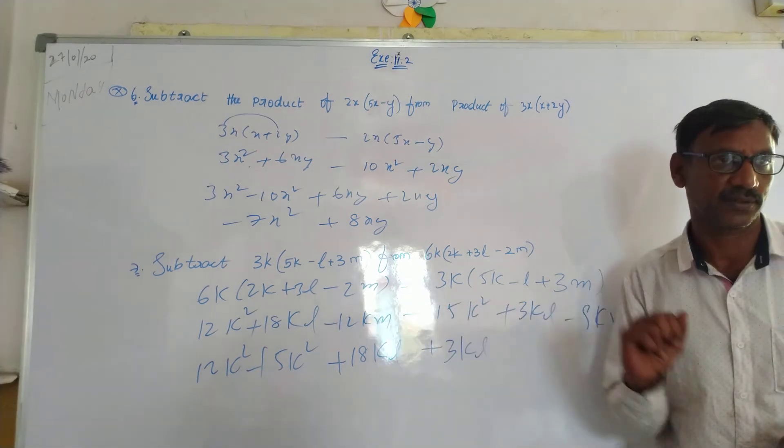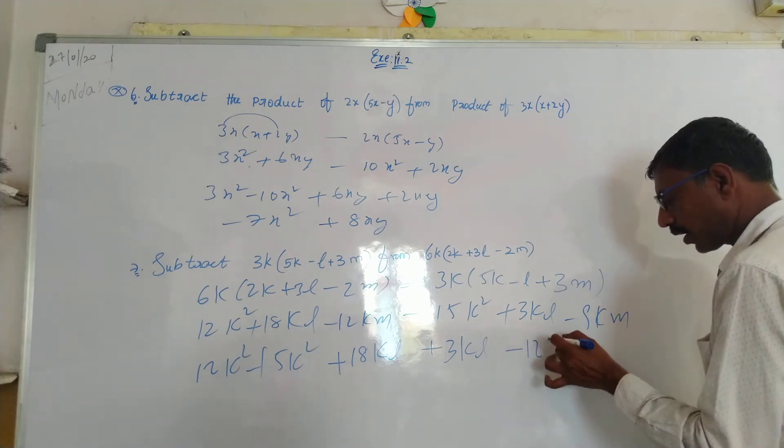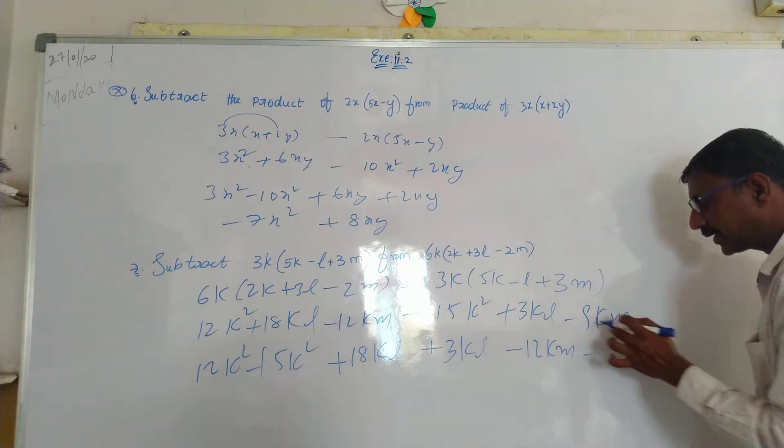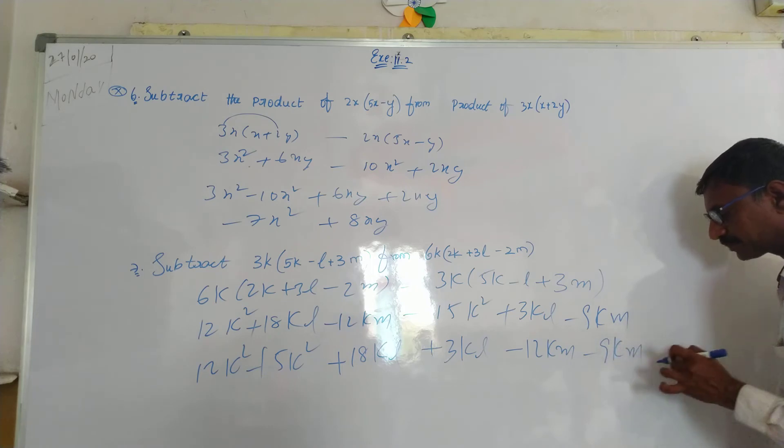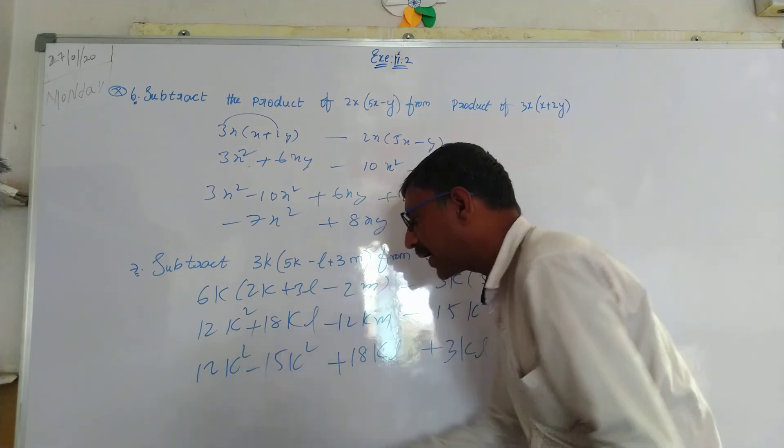This is the like terms, KL terms. Minus 12KM, minus 9KM. This is subtraction, minus.